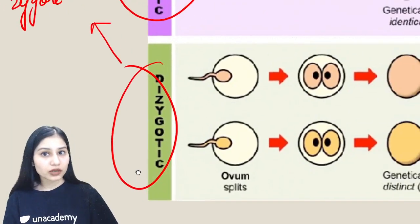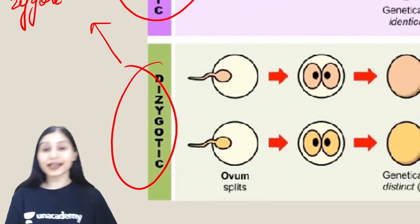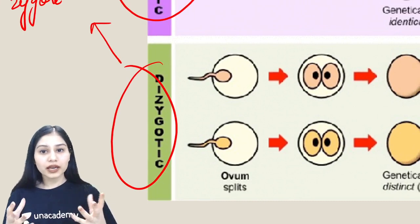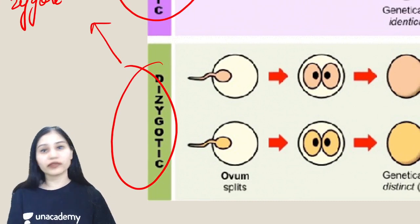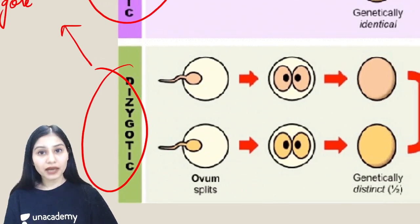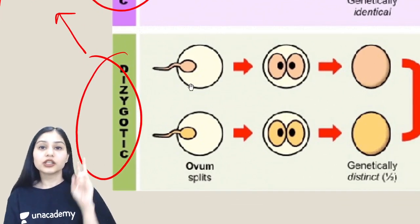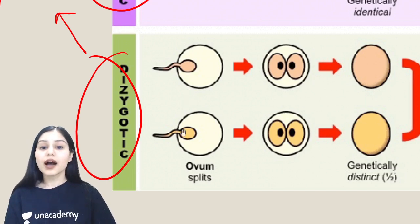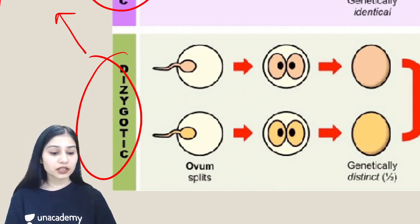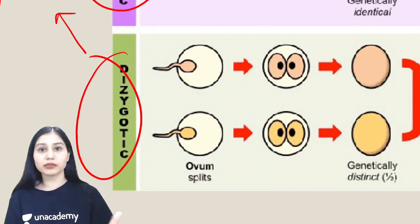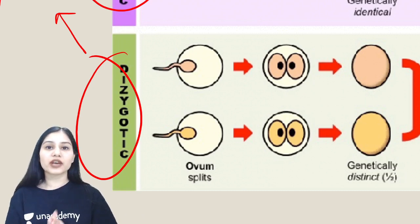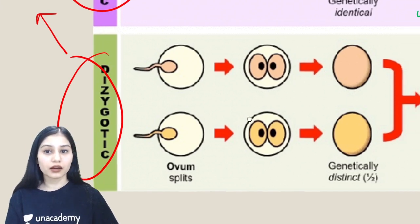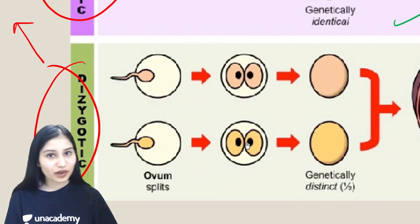If we talk about dizygotic twins, two zygotes form hote hai. Sometimes ovary kya kerti hai - ek ki jagah do ovum release kerti hai. Aisa normally nahi hota hai, but again rare conditions mein what happens: two ovum, yaani ki do female egg cells, female gametes, release ho jate hai. Ab yeh dono ka jo fertilization hai - sperms toh bahut saare hai. Toh dono ko hi jaake individually alag-alag sperms fertilize kerti hai. Aur yaha se aapke paas do zygotes form ho jayenge.